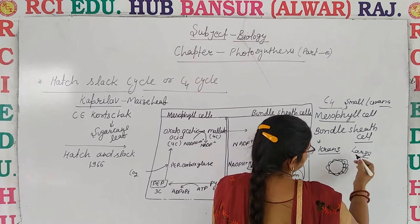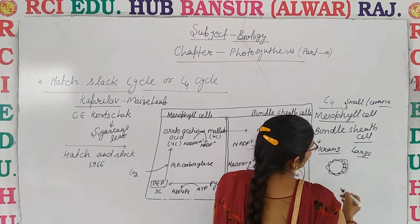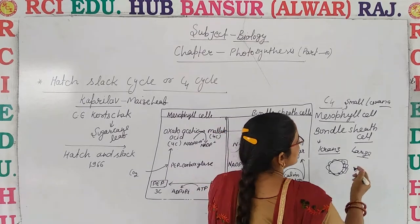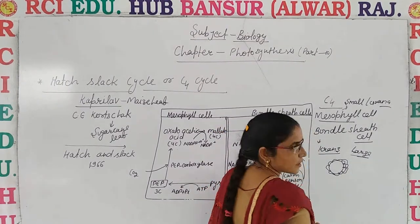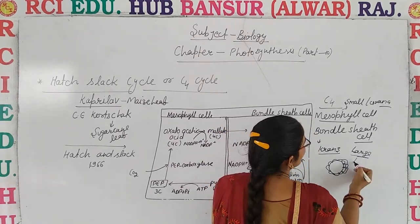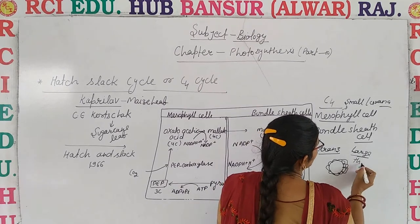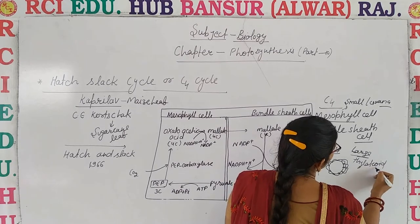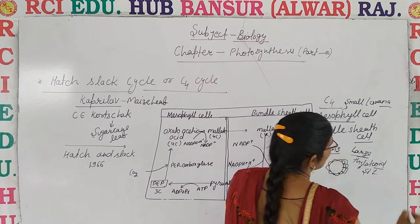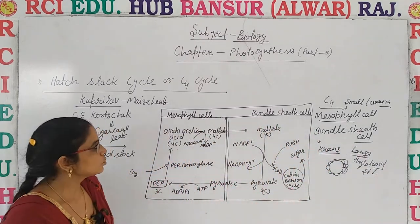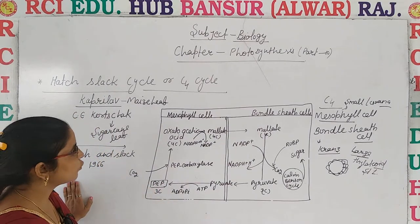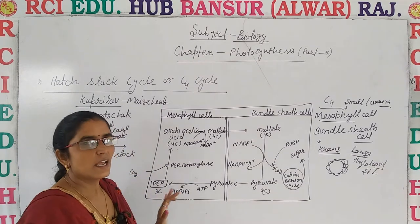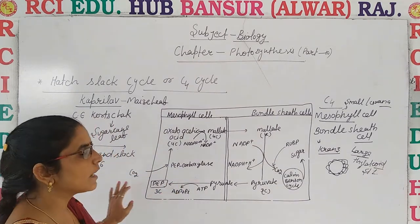The thylakoids are present in the form of stroma lamellae. This is what is important about C4 plants — they have two types of photosynthetic cells as well as they show Kranz anatomy.